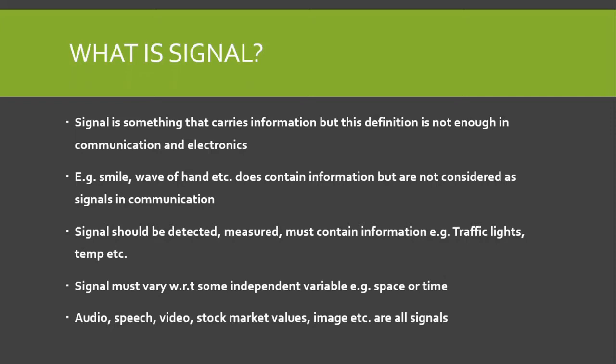For example, traffic lights can be detected, measured using a lux meter, and they convey information — the red light tells us to stop, the yellow light tells us to wait, and the green light tells us to go. Similarly, temperature can be detected and measured using a thermometer, and it gives us information about the environment. So traffic lights and temperature are examples of signals.